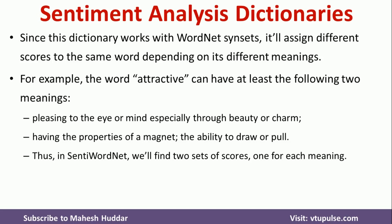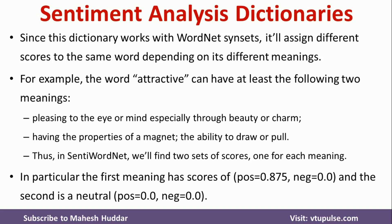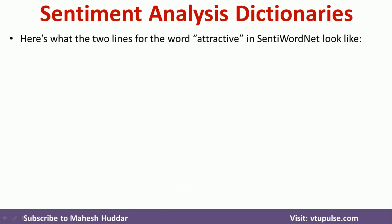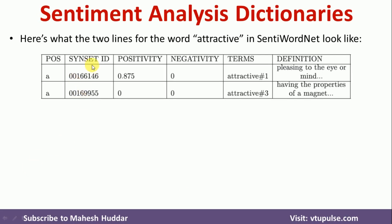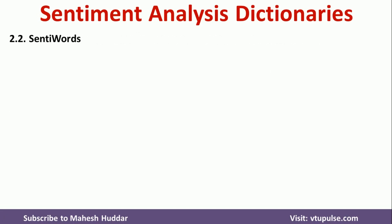So according to the context, each synset will have different scores. In the first case, the positive score is 0.875, negative is 0, and neutral is 0. In the second case, the neutral score is high while positive and negative are both 0. The dictionary contains a synset ID, positivity score, and negativity score for each term.